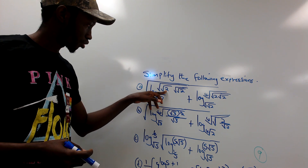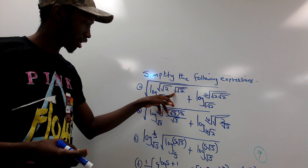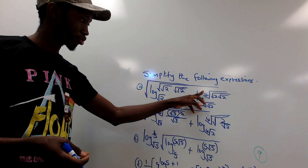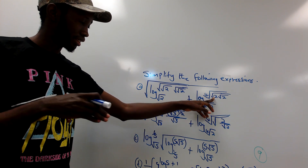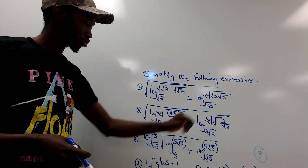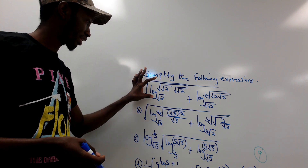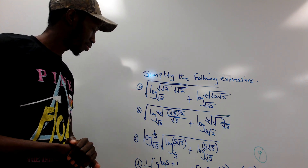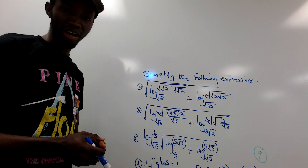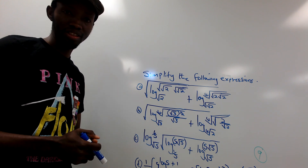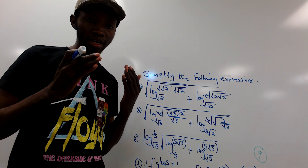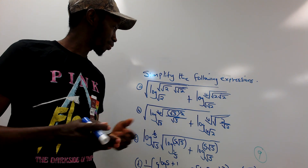The first problem is given as the square root of: log of the square root of the square root of root 2, multiplied by the square root of root 2, with base root 2, plus log of the fourth root of root 2, base the square root of the square root of 2. We are given these problems to simplify them to a unique value.